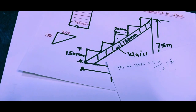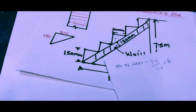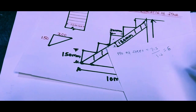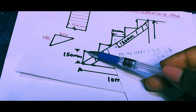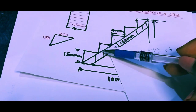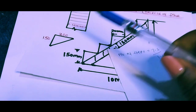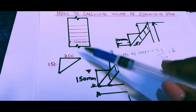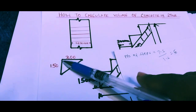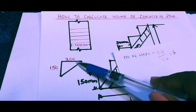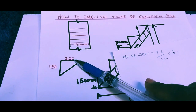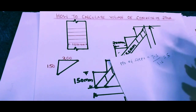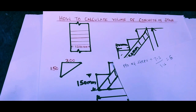We have 5 steps. Now we proceed to find the volume of one step. Each step forms a rectangle made up of the riser and the tread. The volume is contained within that rectangular portion, so we want to find the volume of concrete in one step.